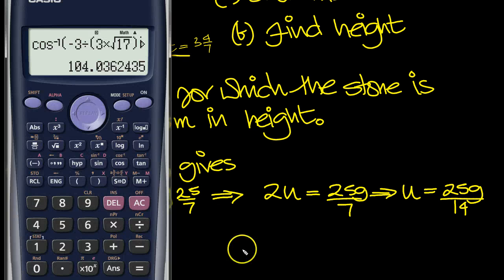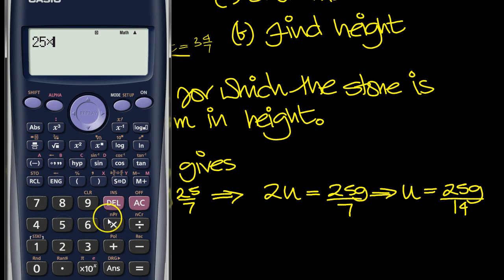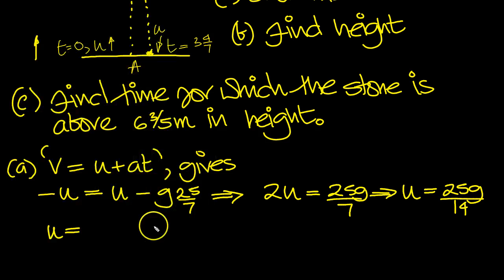Let's just tap in the calculator then. 25 times 9.8 divided by 14 equals 17.5, which is what we wanted, 17.5 meters per second. So there's u then for part a.